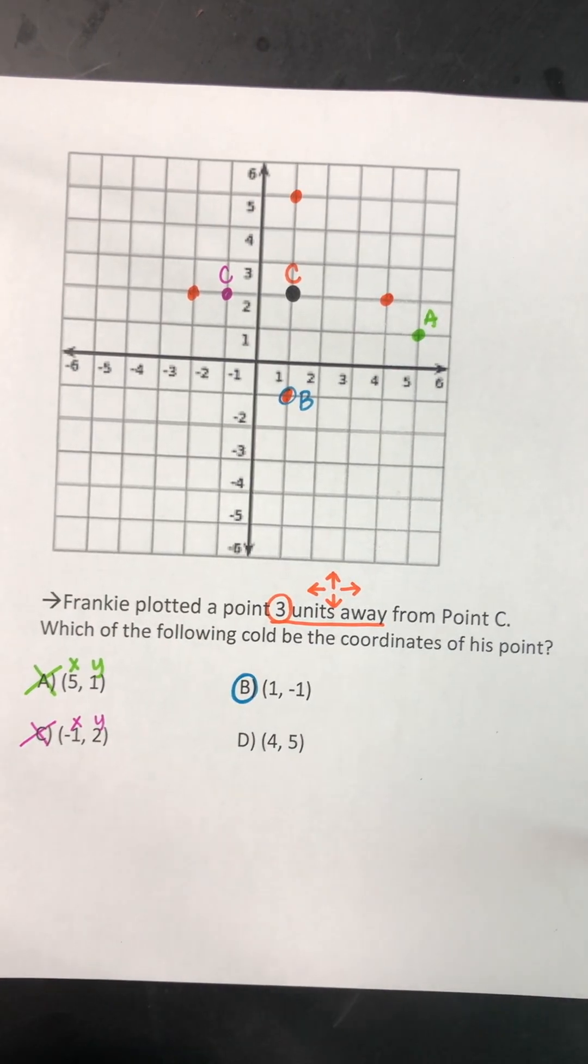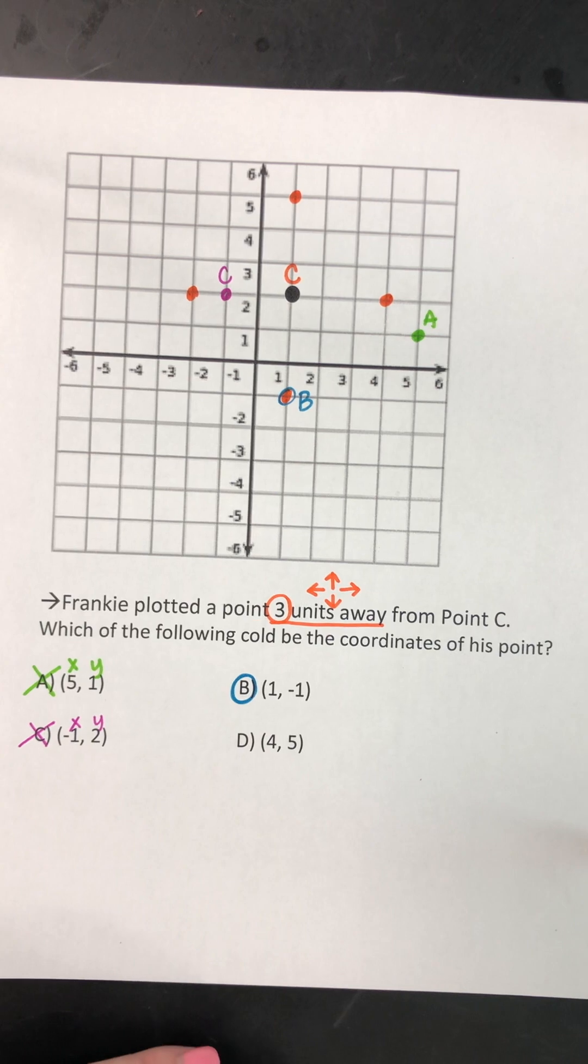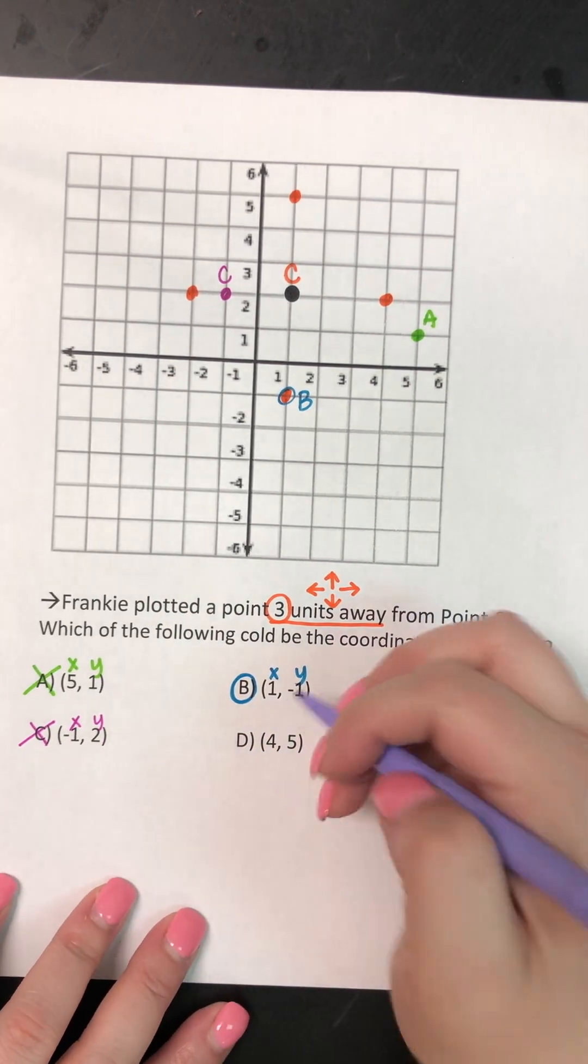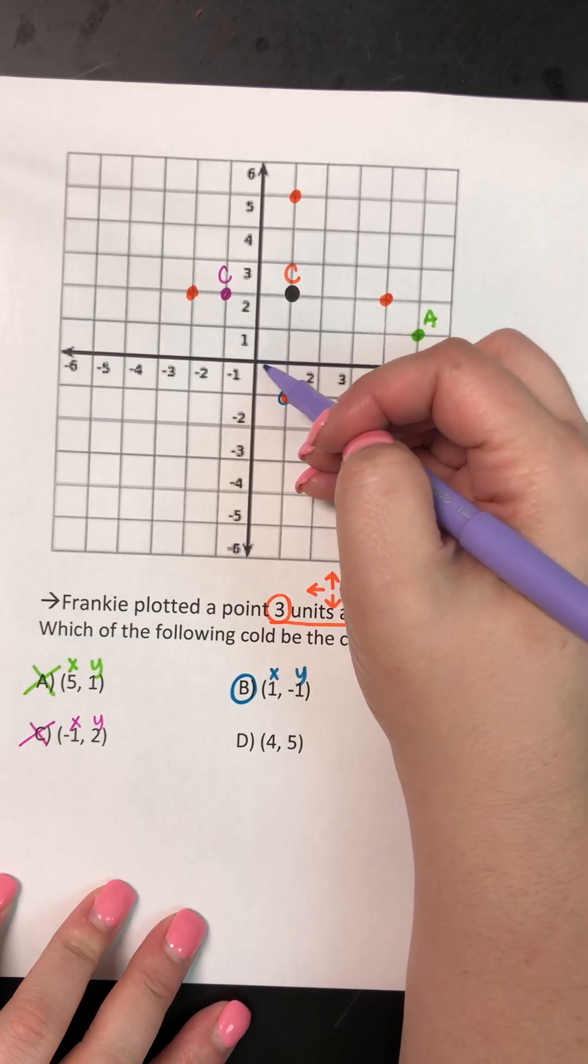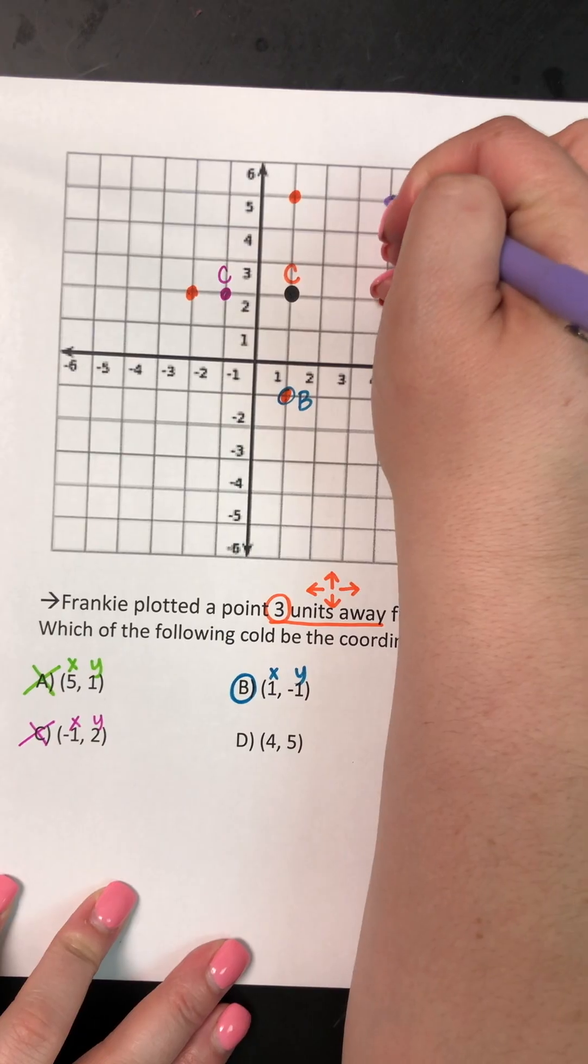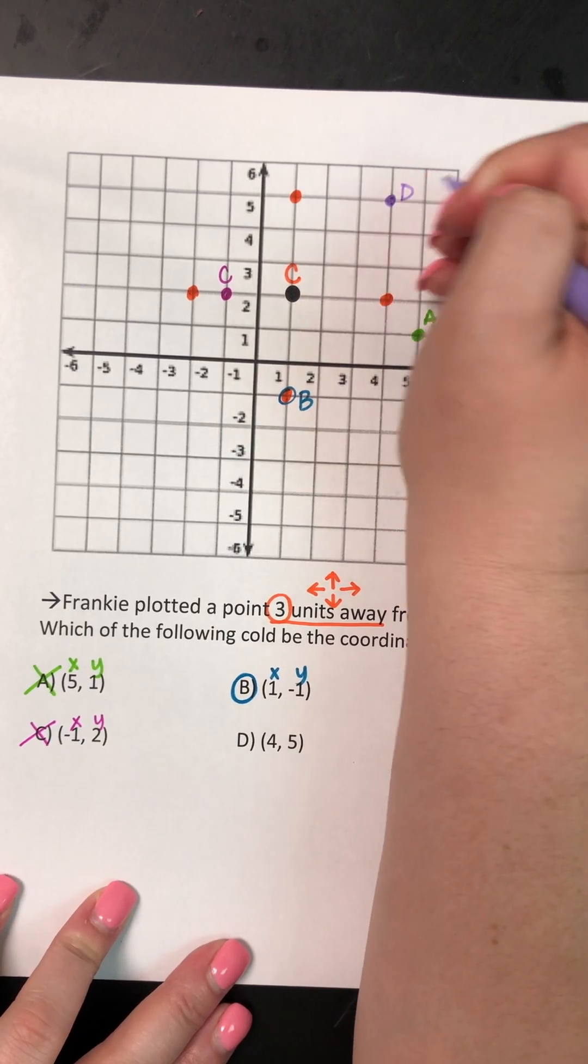And then my last one, D, says positive four, positive five. So I'm gonna start at zero, zero. I'm gonna walk positive four, and I'm gonna take the elevator up to positive five. Okay. And that is point D.